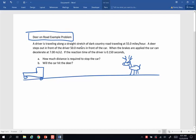A driver is traveling along a straight stretch of dark country road, traveling at 55 miles per hour. A deer steps out in front of the driver, 50 meters in front of the car. When the brakes are applied, the car can decelerate at 7.0 meters per second squared. If the reaction time of the driver is 0.15 seconds, how much distance is required to stop the car? And will the car hit Bambi over here?